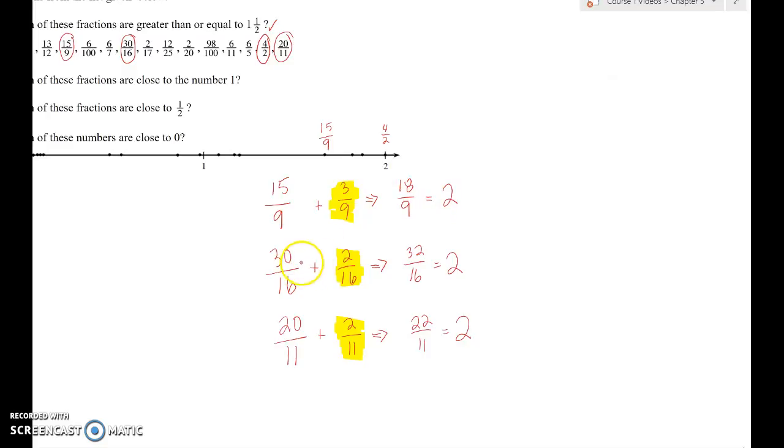Adding 2/16, a sixteenth is smaller than an eleventh, so that means that 30/16 must be bigger than 20/11. I needed to add less to get me to 2. I'm adding less to get me to 2. From here, I'm adding 2/11, which are bigger than 2/16. So that's how I did that.